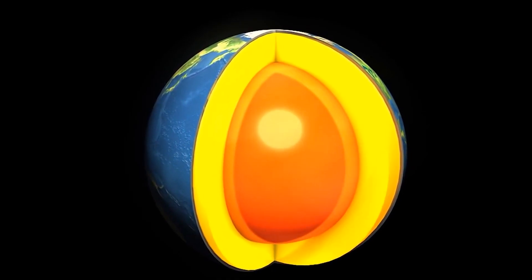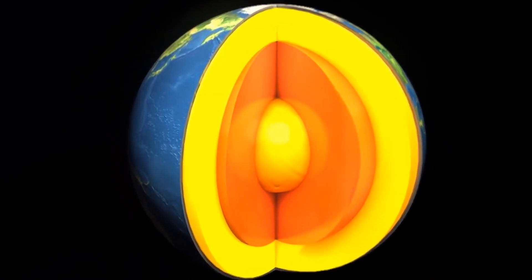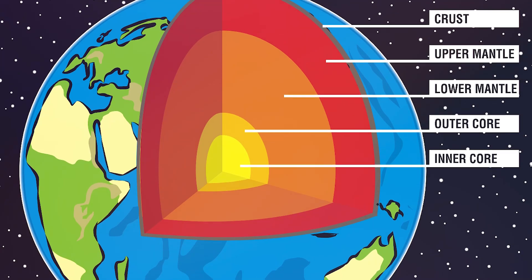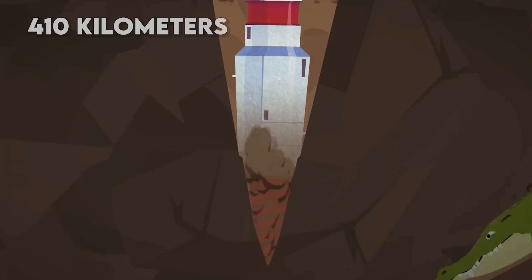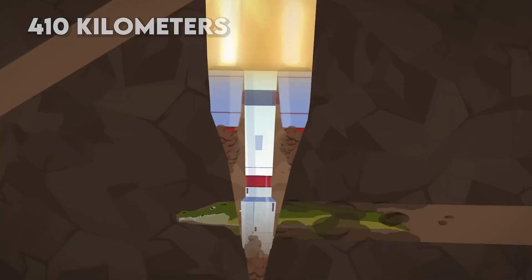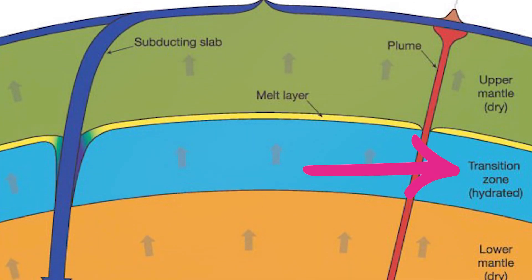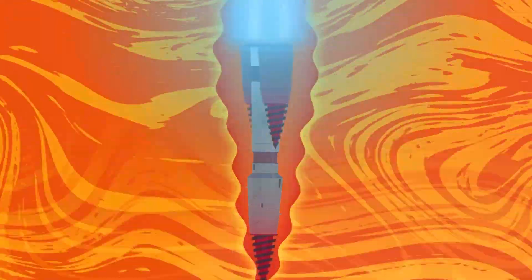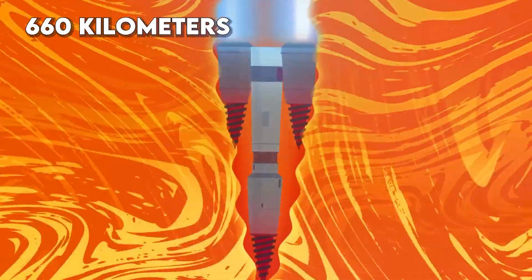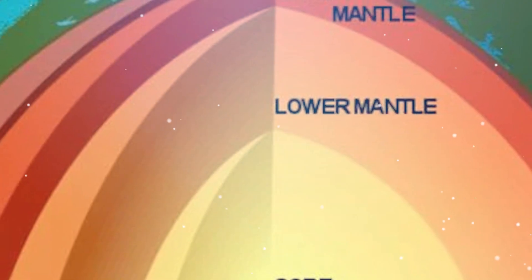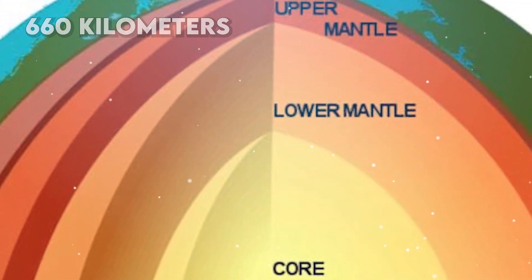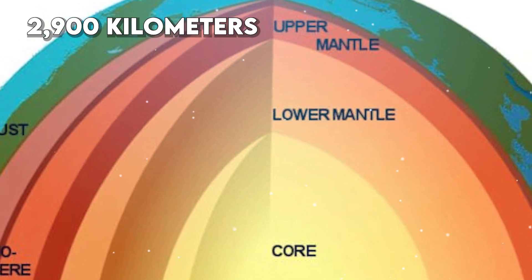And get this - the mantle's not just one uniform substance. It has different layers with various depths and temperatures. The uppermost part is called the upper mantle, extending from the base of the crust to a depth of about 410 kilometers. Below that lies the transition zone, reaching down to about 660 kilometers. Beyond this point we enter the lower mantle, stretching from 660 kilometers down to approximately 2,900 kilometers.